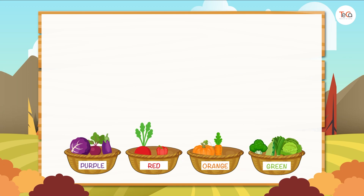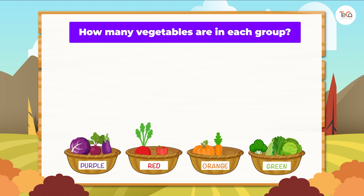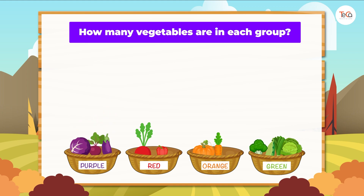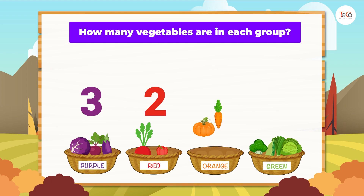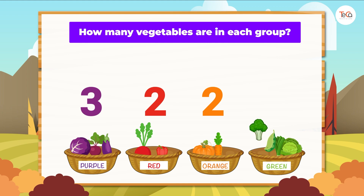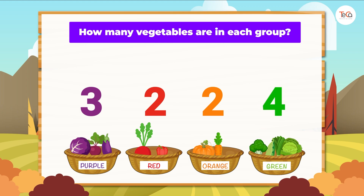Now let's count to find how many vegetables are in each group. One, two, three — there are three vegetables in the purple group. One, two — there are two vegetables in the red group. One, two — there are two vegetables in the orange group. One, two, three, four — there are four vegetables in the green group.